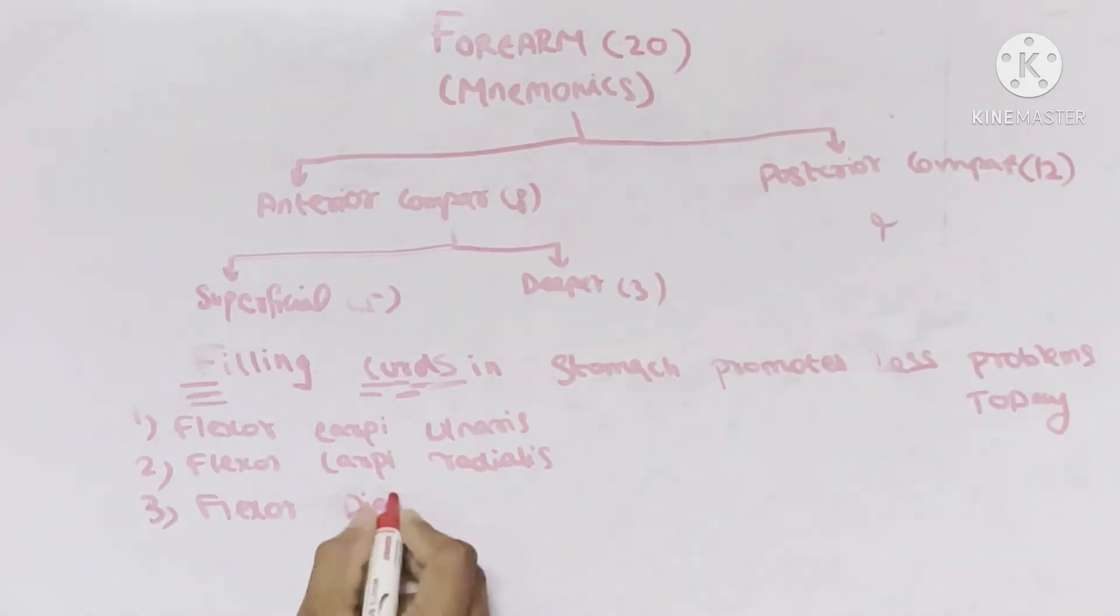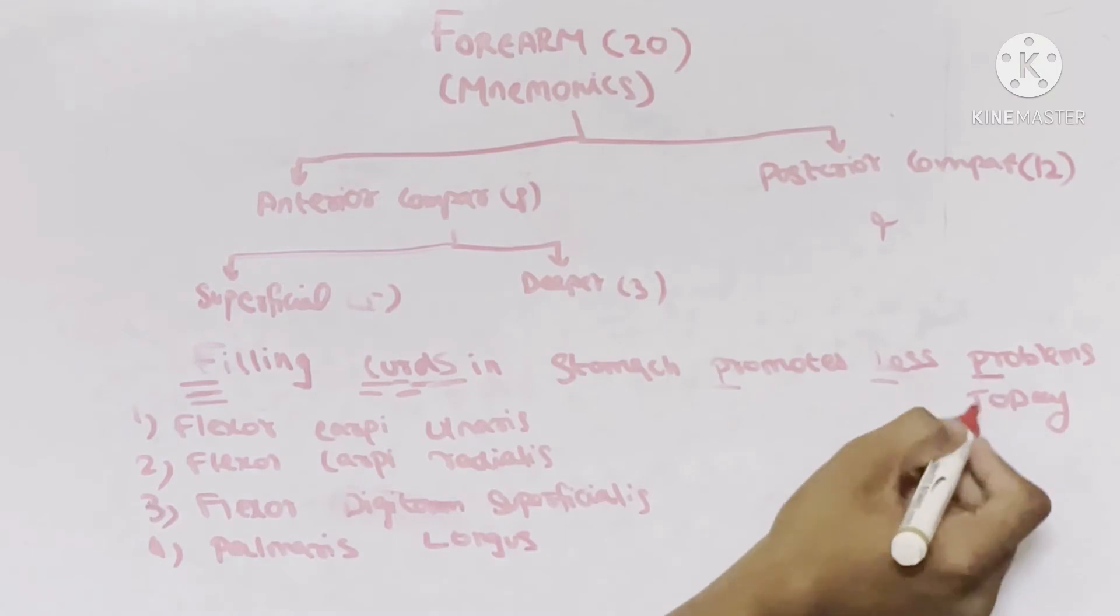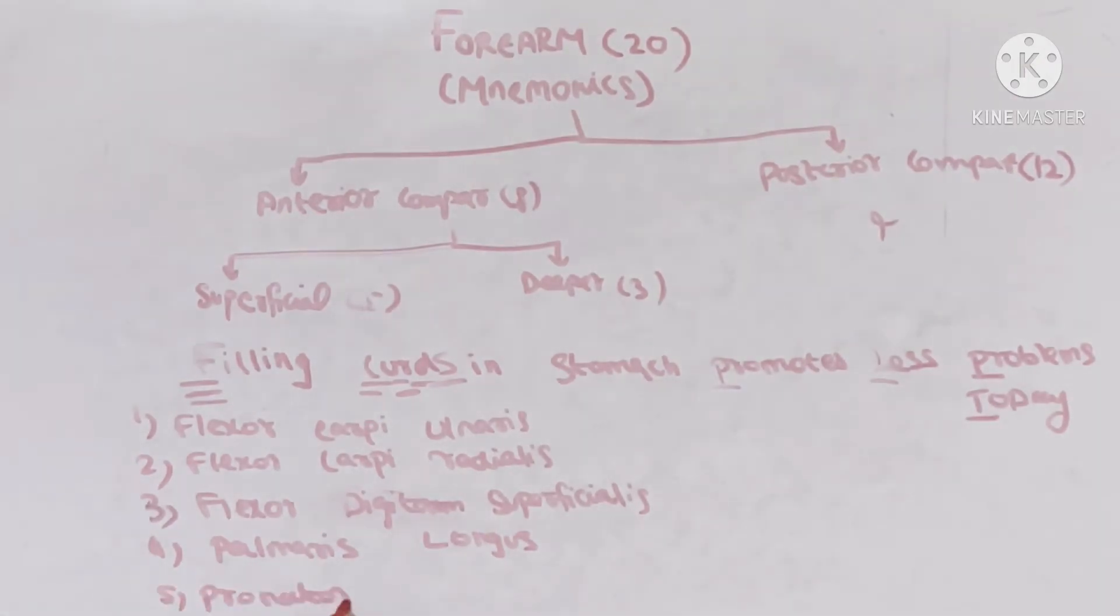Now the fourth muscle is promotes less - P stands for palmaris, L stands for longus. And finally problems today, here P stands for pronator, T stands for teres. So that's all. So these are the five muscles of superficial.